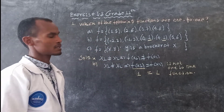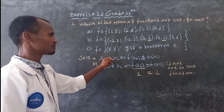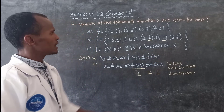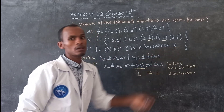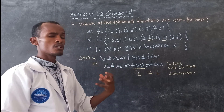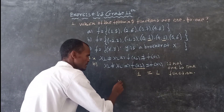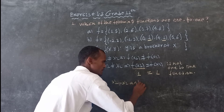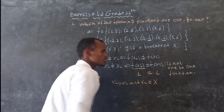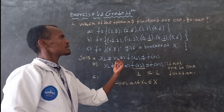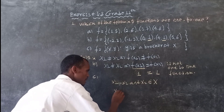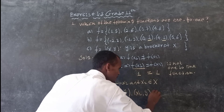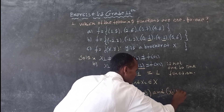F is the function which is the order of (x, y). y is related to x. x1 and x2 are exactly the same. x1 is related to y, x2 is related to y, x3 is related to y.